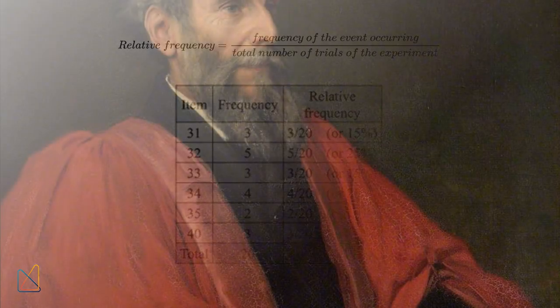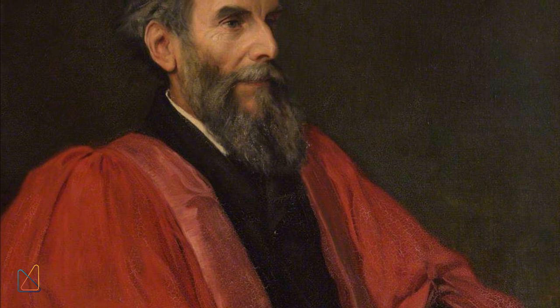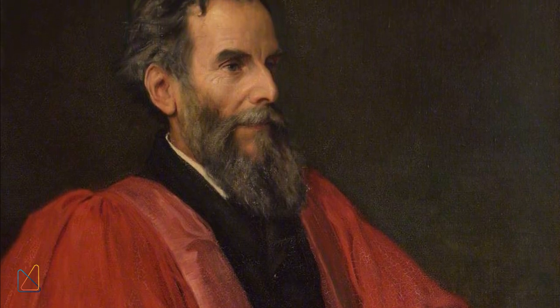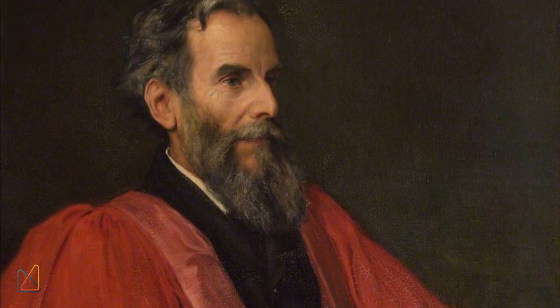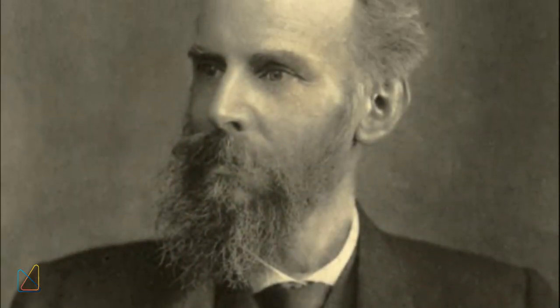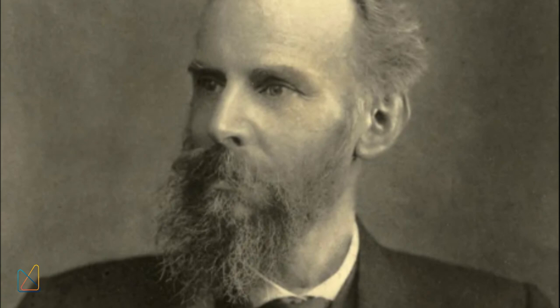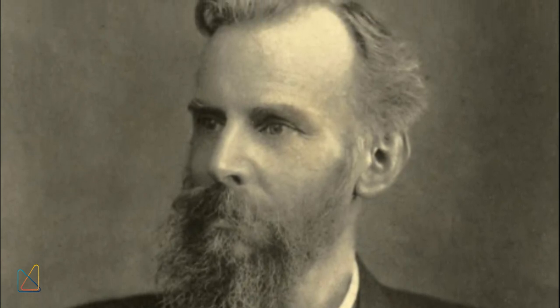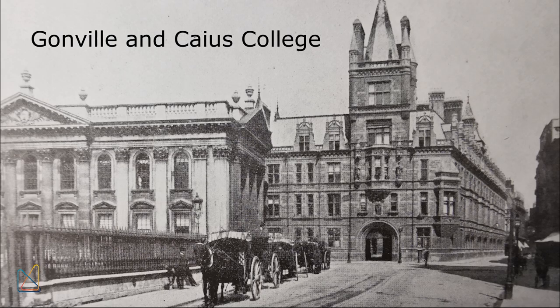In 1883, Venn resigned from the clergy, believing Anglicanism was incompatible with his philosophical beliefs. He continued to teach and was elected a Fellow of the Royal Society in 1883. In 1903, he became the president of Gonville and Caius College, a position he held until his death.